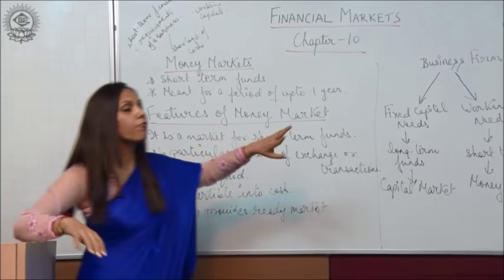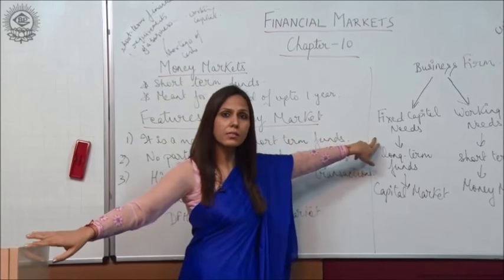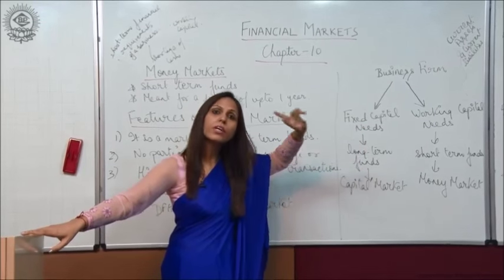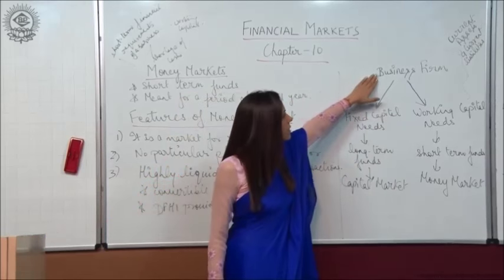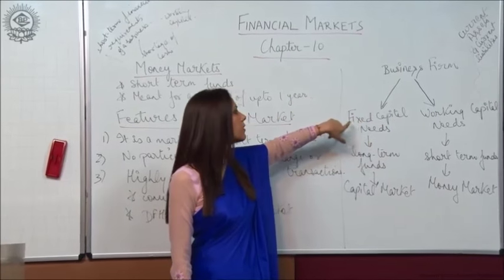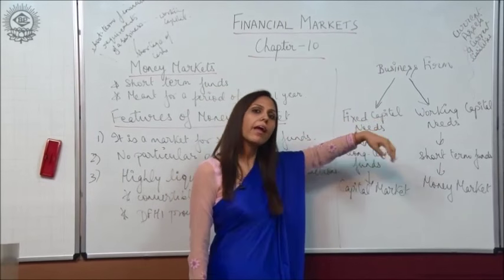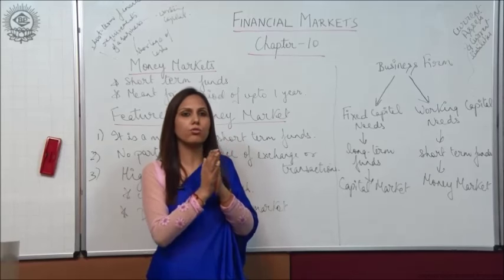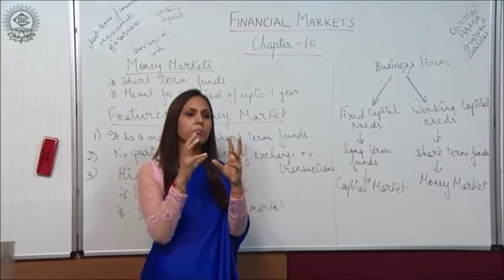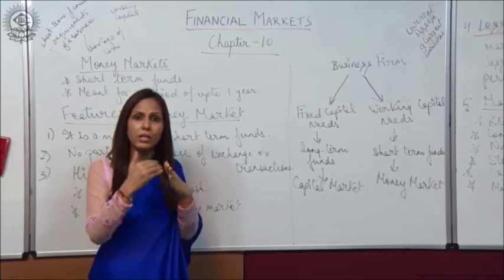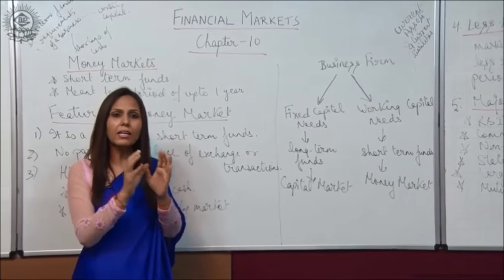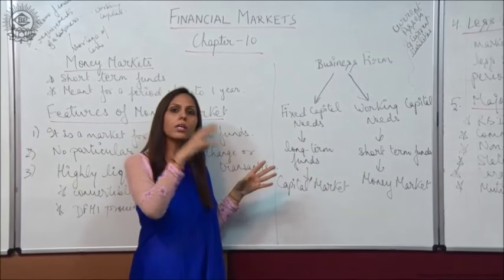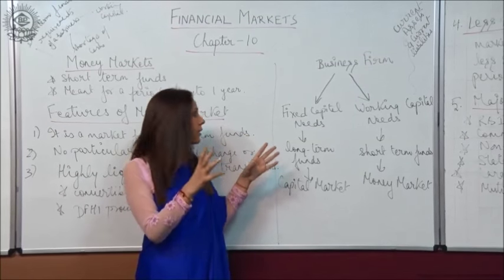The first one is for purchasing fixed capital assets, and that is required for the longer period of time. So a business firm requires money for 2 purposes: one is fixed capital needs and the second is working capital needs. Fixed capital means the capital meant for purchasing plant, machinery, building, etc. That capital is meant for the longer term, also called capital funds.